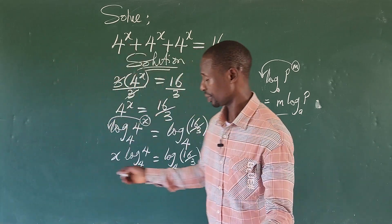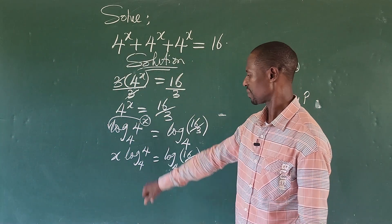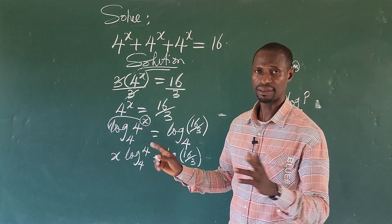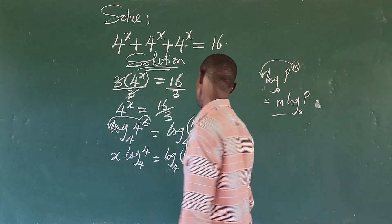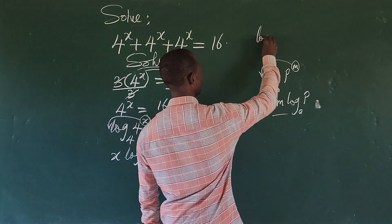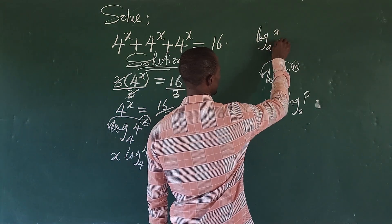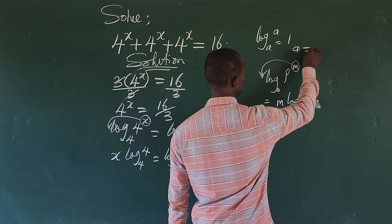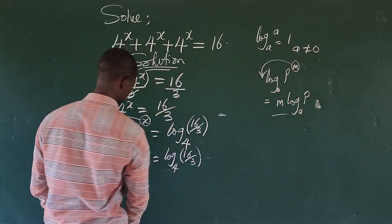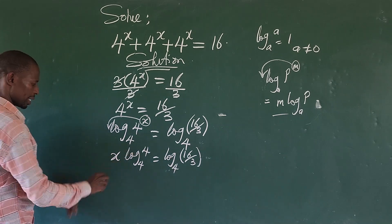Now, any log of itself will give you 1. Remember that if you have log base e of e, this equals 1, provided e is not equal to 0. So from here, this will give us x.